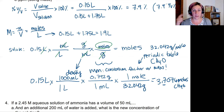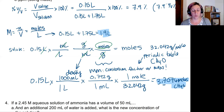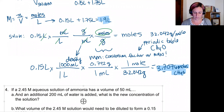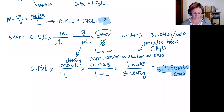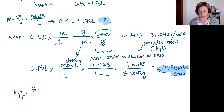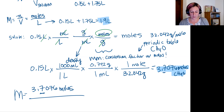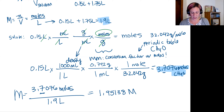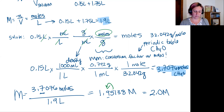So that one mole divided by 32.042 grams is my last conversion factor. Plugging everything in, I get 3.7076 moles of methanol. I started with two significant figures. Now I have my volume and my moles, so I can plug both into the molarity calculation: 3.7076 moles divided by 1.9 liters gives 1.95138 molar, which rounds to 2.0 molar with two significant figures.